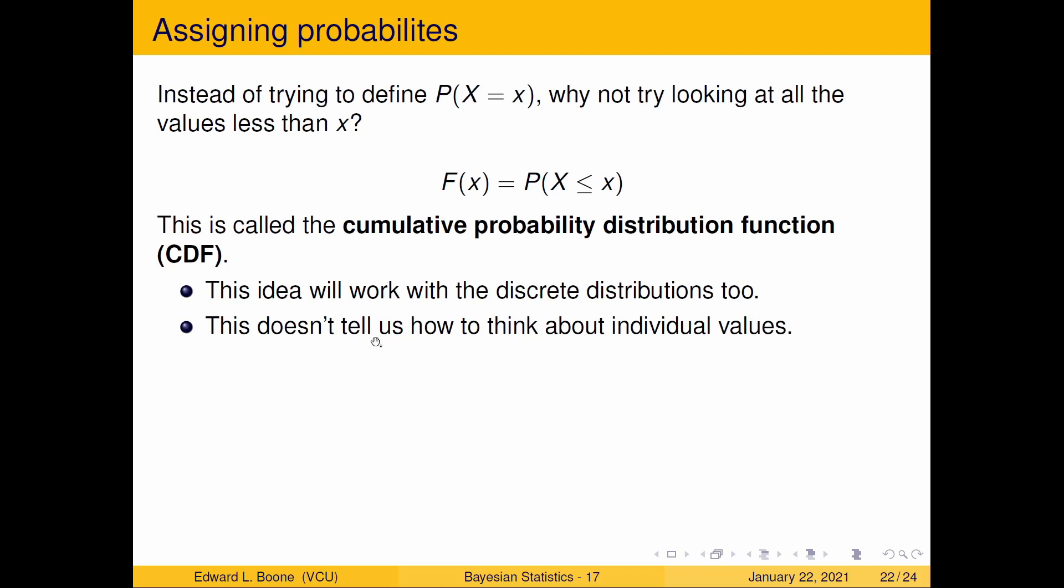The problem is it doesn't tell us how to think about individual values. And that's what we actually like to do. We need one more video before we get to Bayesian statistics that tells us how to think about individual values for continuous random variables. We're here, we're almost to the point where we can actually start doing some Bayesian statistics. We need to talk about parameters and probability distributions and how to get the individual valued ones, which are probability density functions. Once we have those two, we'll be able to talk about Bayesian statistics in an actual framework where you know what's going on instead of just some mindless computer program. We're going to move on to the next video and see you there.